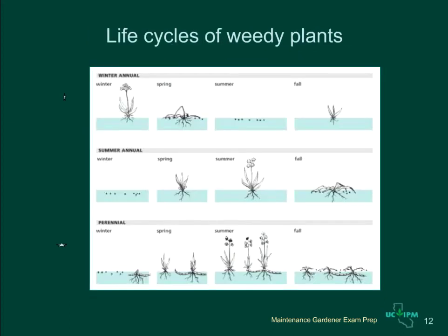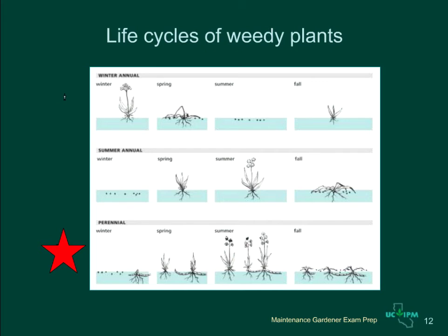Knowing how long a weed will live is important in deciding how best to manage it. Annual weeds live less than a year — they produce seeds and then die out. Winter annual weeds germinate in fall and set seed in the spring. Summer annual weeds germinate in the spring and set seed in the summertime. Perennial weeds live longer than a year. Although the tops of perennials often die back, the plant stays alive in sturdy underground stems, bulbs, or other vegetative structures that send out new shoots the next spring. Because these vegetative structures are hard to kill, perennial weeds are much more difficult to control than annual weeds.